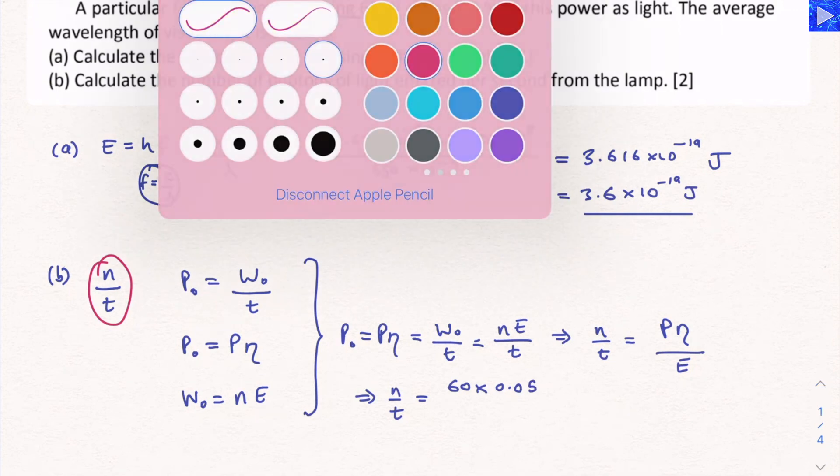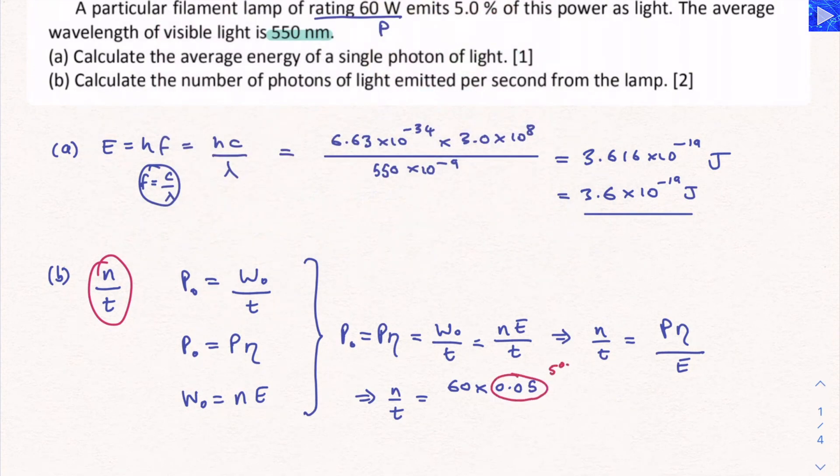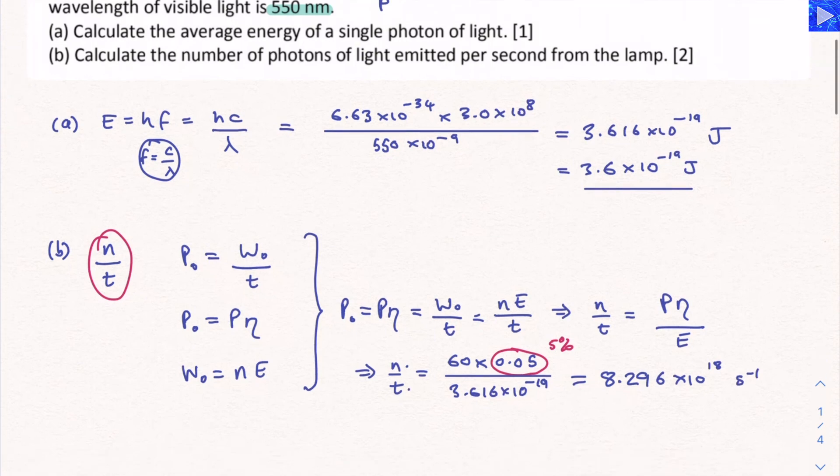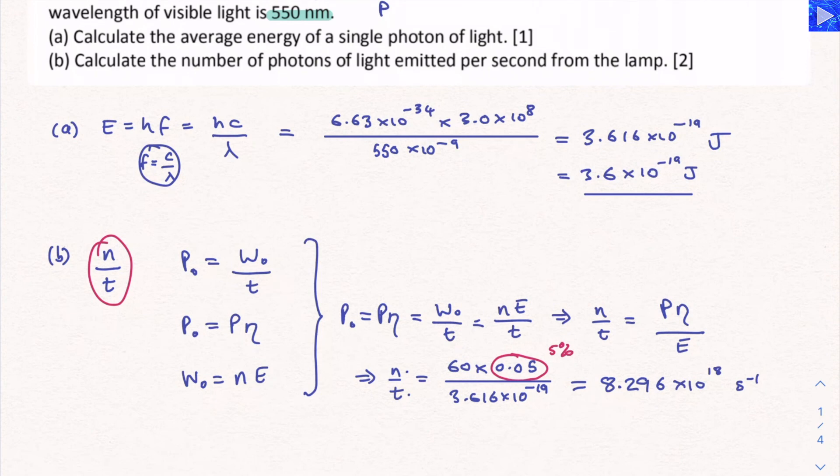Now we can substitute values in. Therefore, n over t is equal to 60 watts multiplied by 0.05, that's 5%, over E. E is 3.616 times 10 to the minus 19. I'm using the 4SF value that I wrote down. It's a good idea to leave those 4SF values written down. When we do that calculation, we get 8.296 times 10 to the 18 per second. If I write that to 2SF, that would be 8.3 times 10 to the 18 per second. And that is our solution for that question.